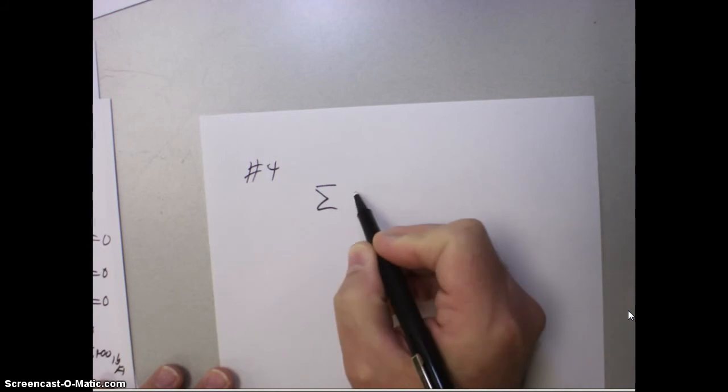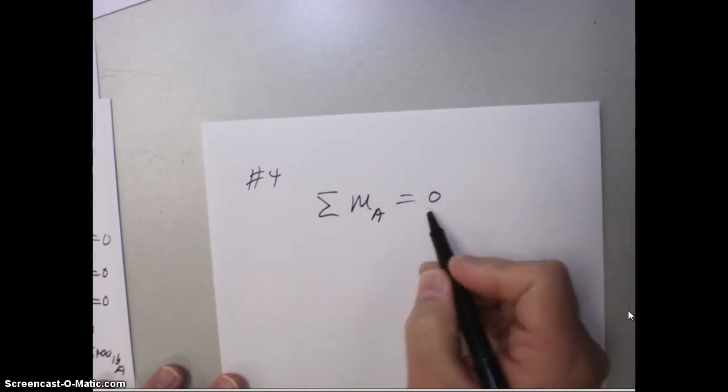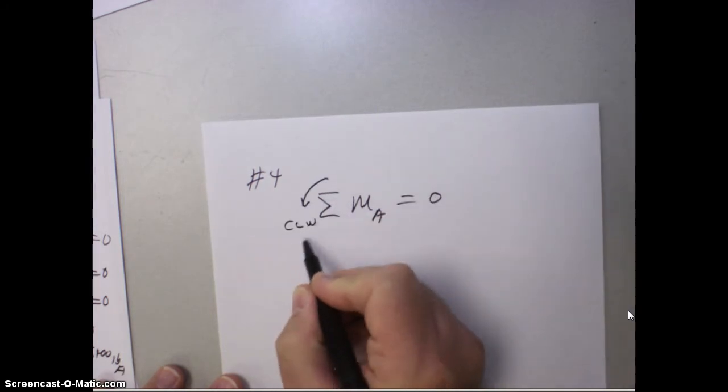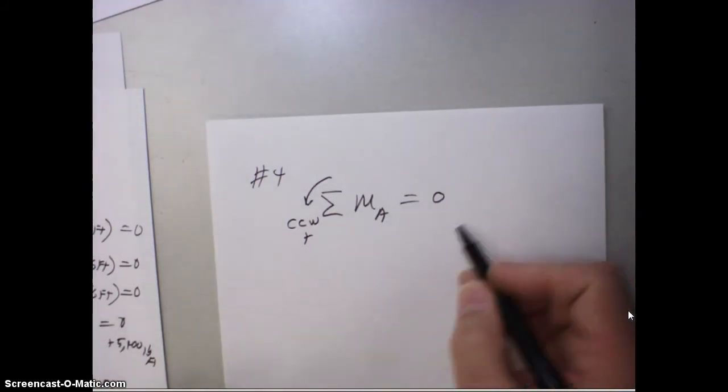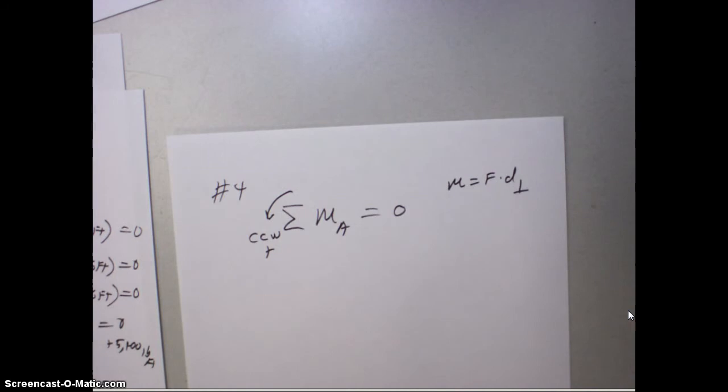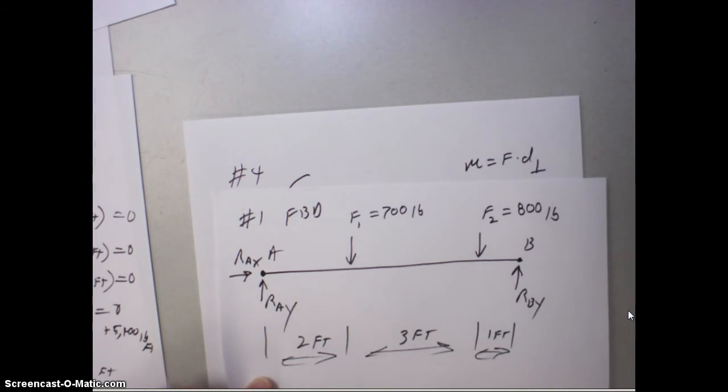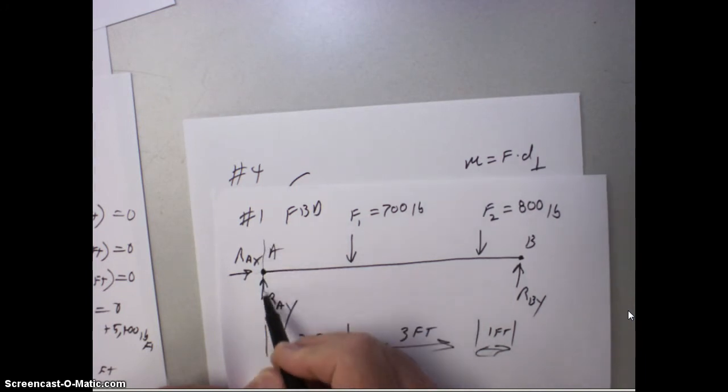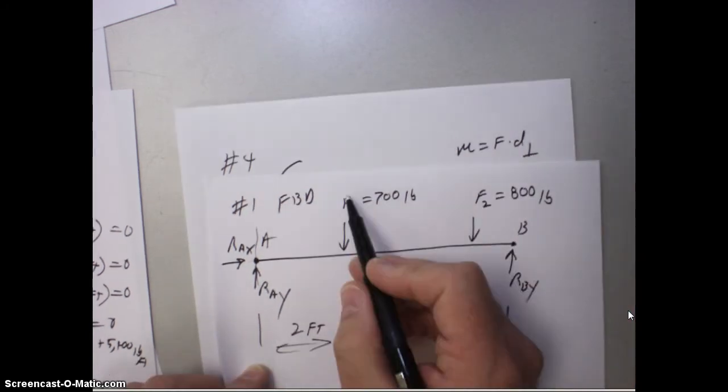So number four here, we're going to look at the sum of the moments around point A, we identified, equal to zero. Remember, it's static, so there's no acceleration, so that's why it is equal to zero. We declare that counter-clockwise is positive, because that's not universal. So now let's look at all the forces we have, because remember that a moment is force times distance, and that's a perpendicular distance. So let's look at the forces and the distances. So we've got one, two, three, four, five forces. Notice here that when we look at the line of action of this force, it passes through that point. The line of action of this force, it passes through that point, so that's a zero distance, because we're looking for a perpendicular distance.